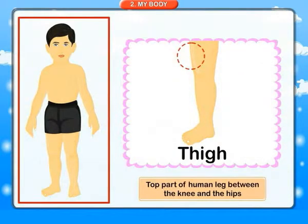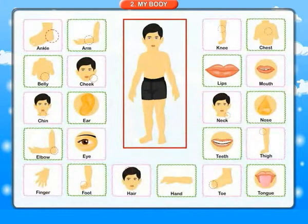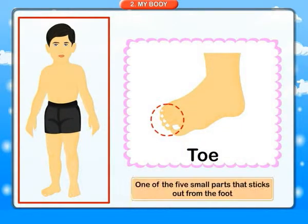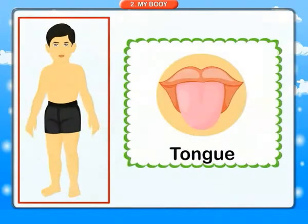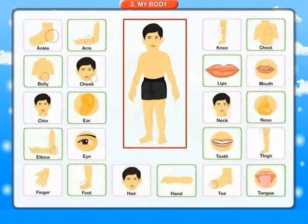Thigh: top part of human leg between the knee and the hips. Toe: one of the five small parts that sticks out from the foot. Tongue: the soft movable part in the mouth used for tasting and speaking.